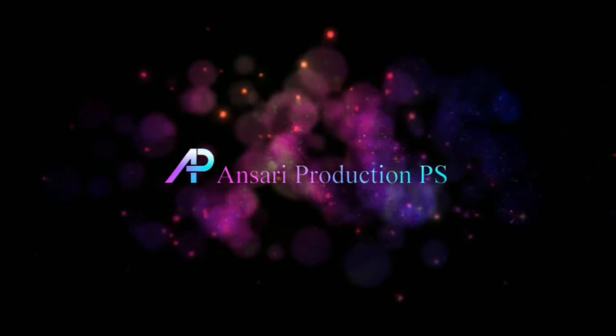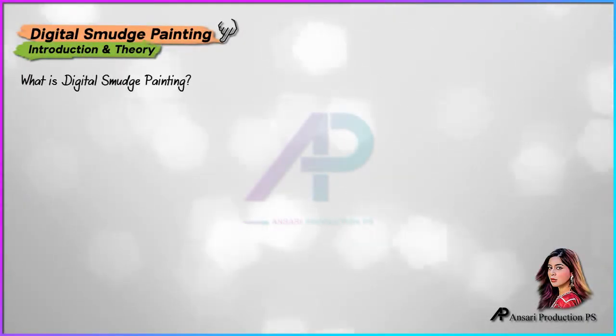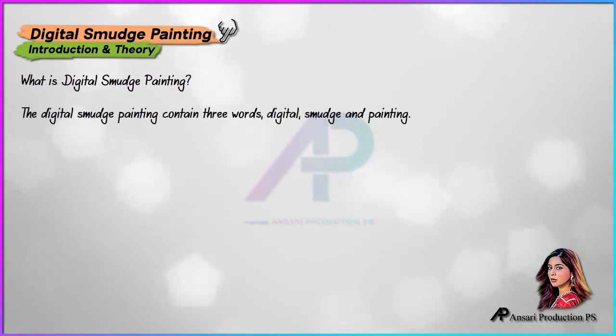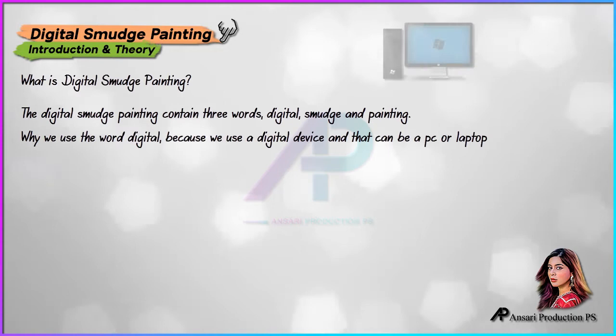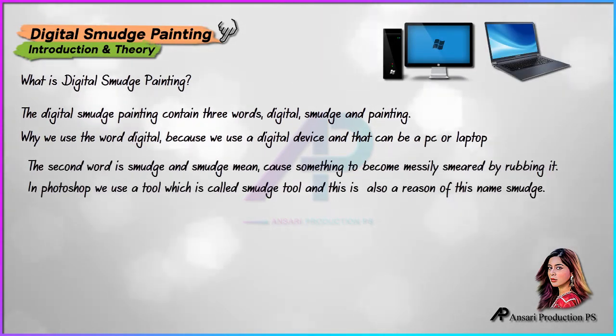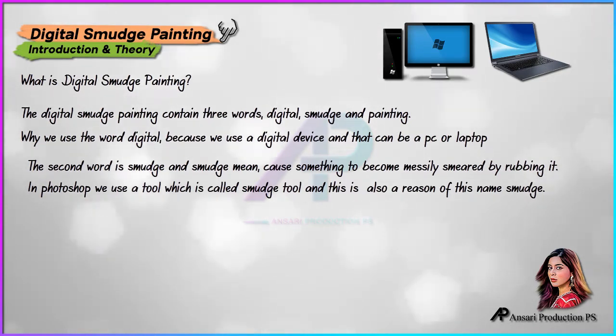So let's start our journey. What is digital smudge painting? Digital smudge painting contains three words: digital, smudge, and painting. We use the word 'digital' because we use a digital device, and that can be a PC or laptop. The second word is 'smudge', and smudge means to cause something to become messily smeared by rubbing it.